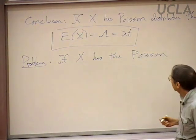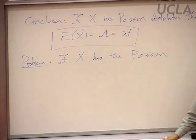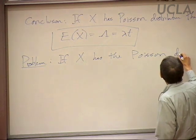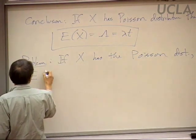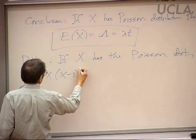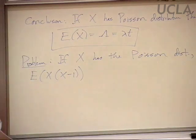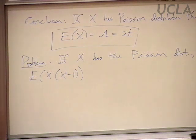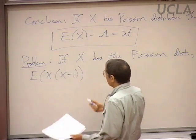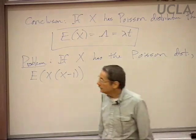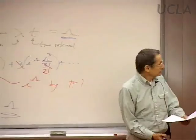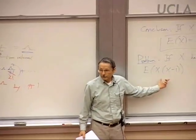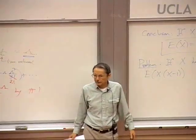Let's do a similar calculation, again assuming x has the Poisson distribution with parameter lambda. Let's look for the expected value of x times x minus one — that's a new random variable, and it's x squared minus x. I want to give two answers to this. Answer one will look a lot like the previous calculation: we'll take all values x times x minus one could have, weight each with the right probability, and add them up.